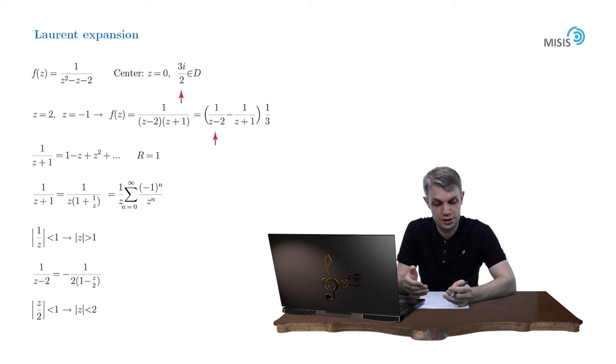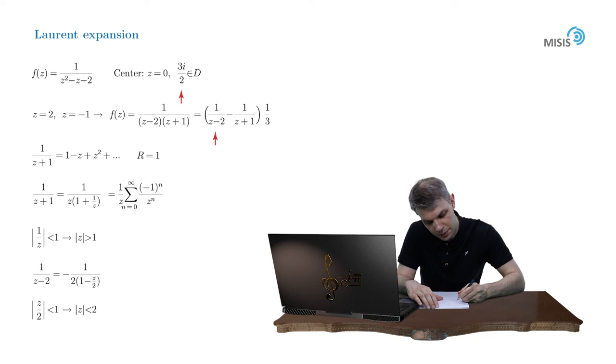And as the result, the first fraction is expanded in positive powers of z. And here we go. Minus 1 half, the sum from 0 to plus infinity, z to the power of n divided by 2 to the power of n. And this way we obtain the full Laurent expansion of our initial expression.